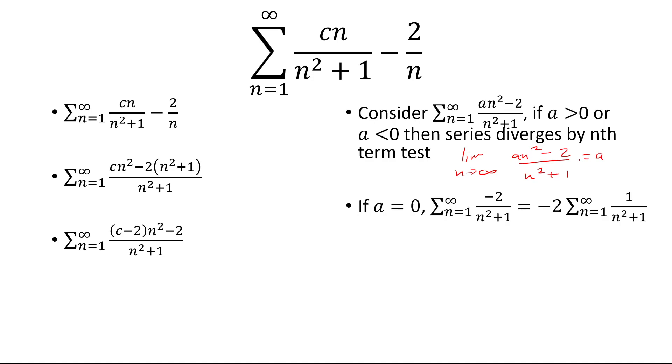Now let's consider a equal to 0. If a is equal to 0, then we're left with negative 2 over n squared plus 1. We can factor out the negative 2. And then let's just focus on 1 over n squared plus 1. So ignore the negative 2 for now.